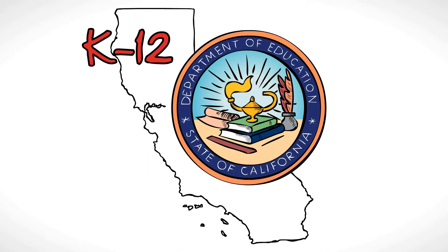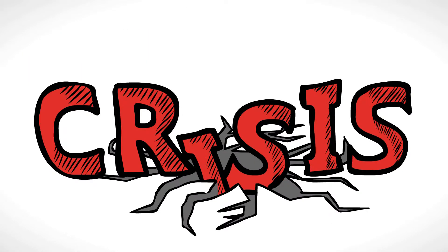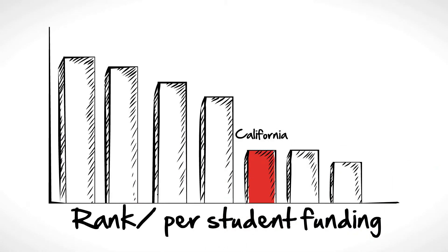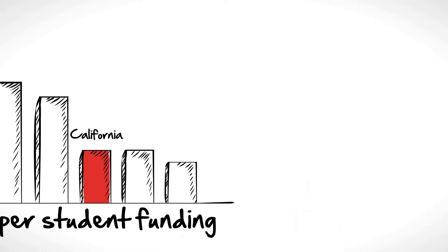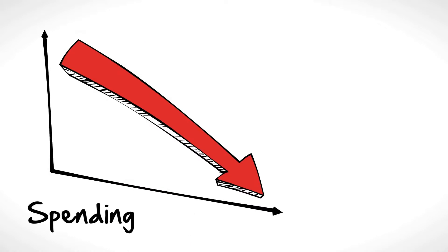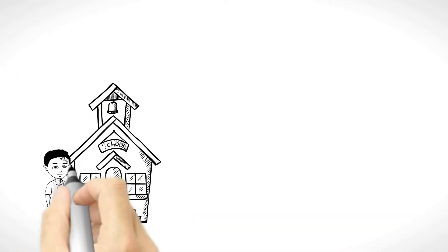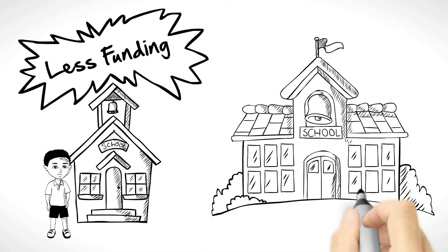K-12 education in California is in crisis. Not only does California rank near the bottom in per-student funding, and spending has been drastically cut, but students in low-income schools receive less funding than kids in well-to-do neighborhoods.